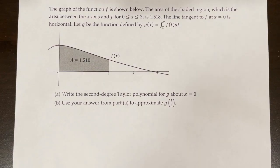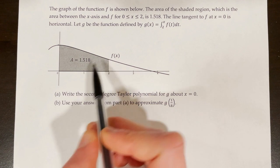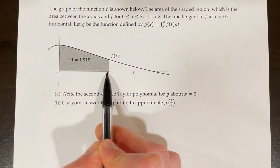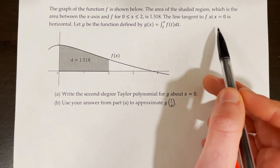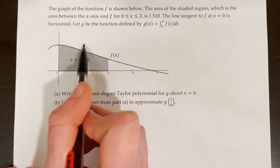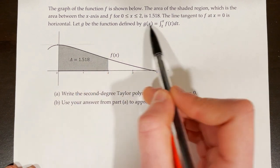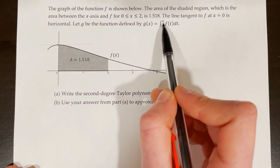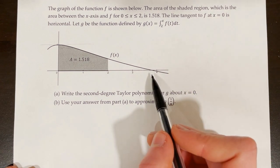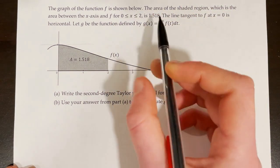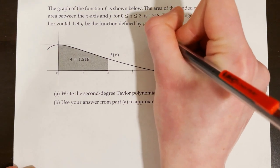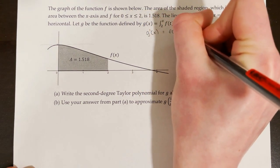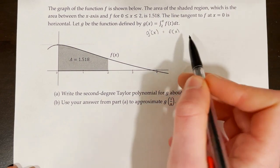The graph of the function f is shown below. The area of the shaded region — the area between the x-axis and f for 0 less than or equal to x less than or equal to 2 — is 1.518. The line tangent to f at x equals 0 is horizontal, meaning that line has a slope of 0. Let g be the function defined by g of x equals the integral from 2 to x of f of t dt. Recall that g prime of x equals f of x.